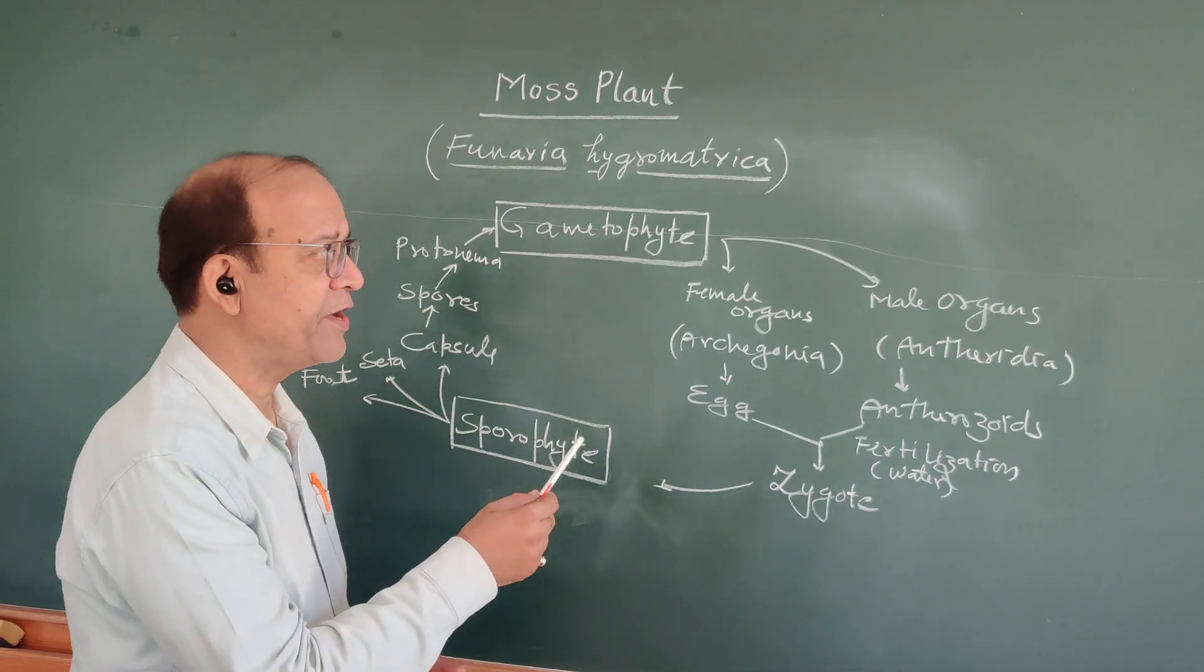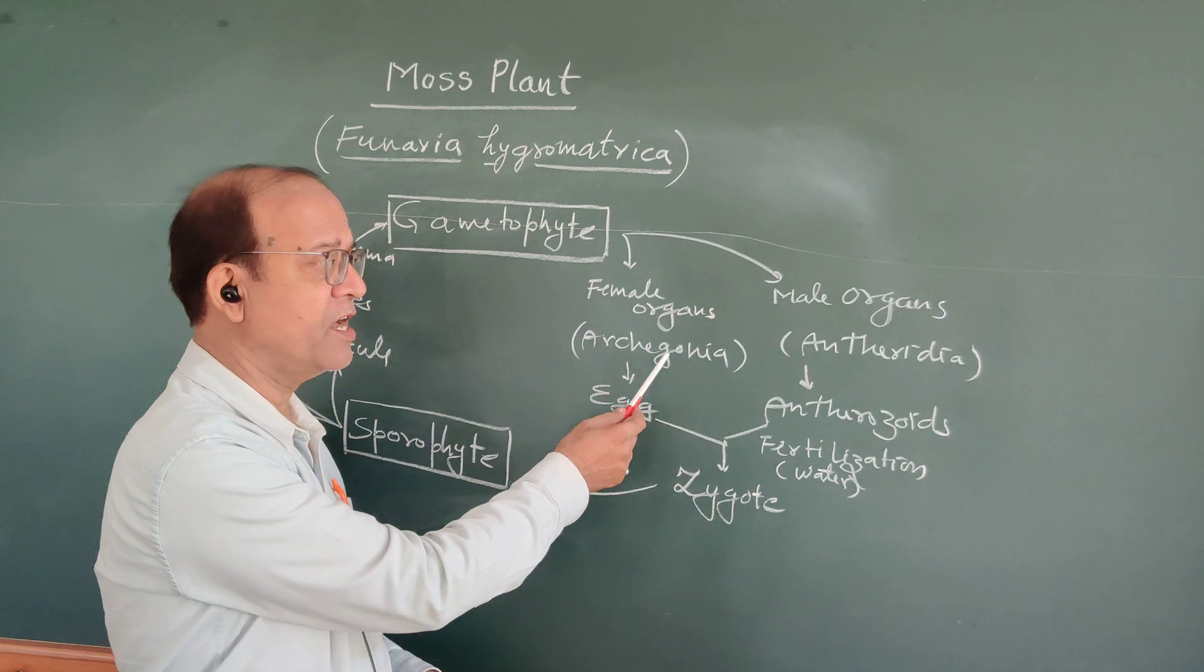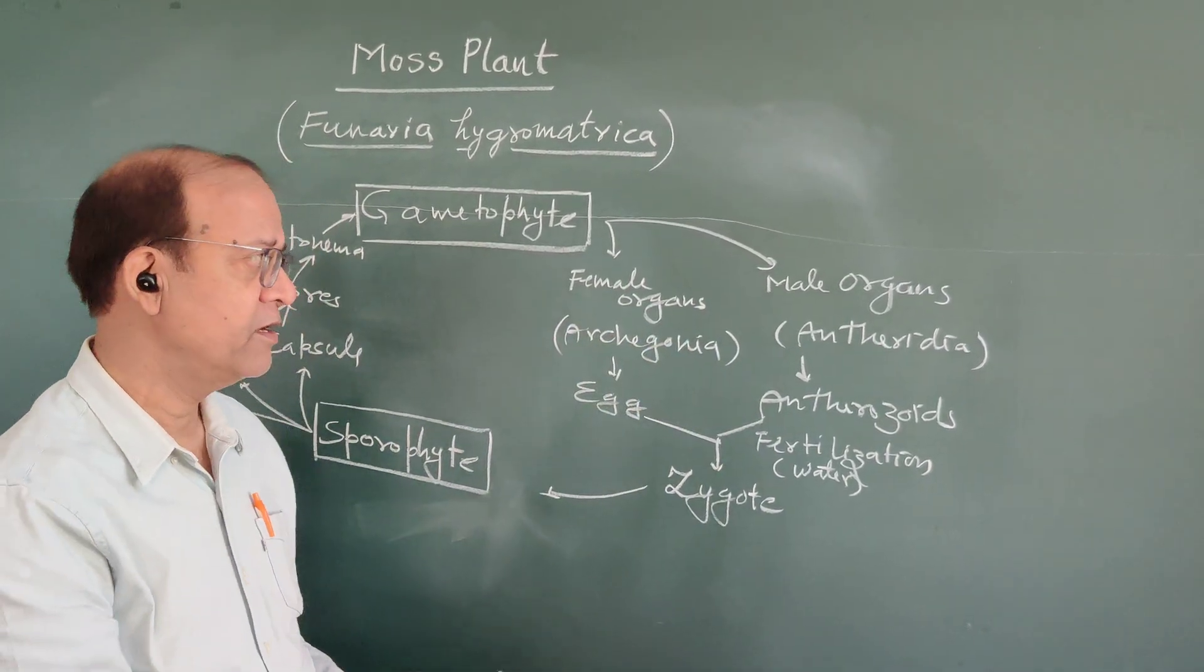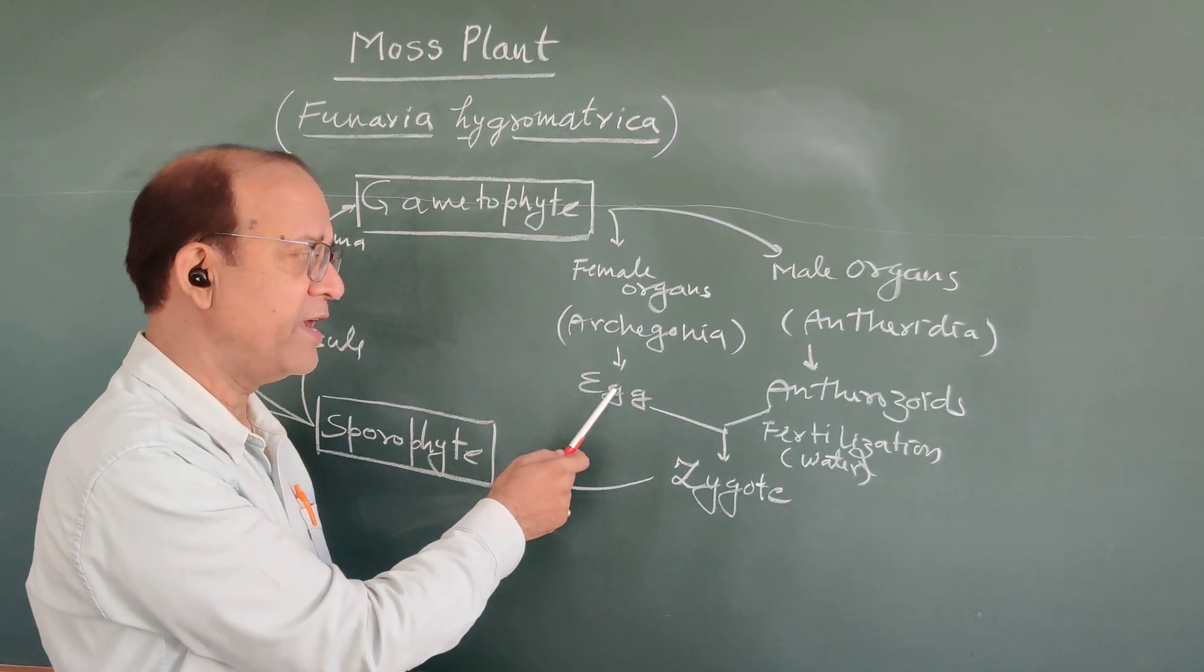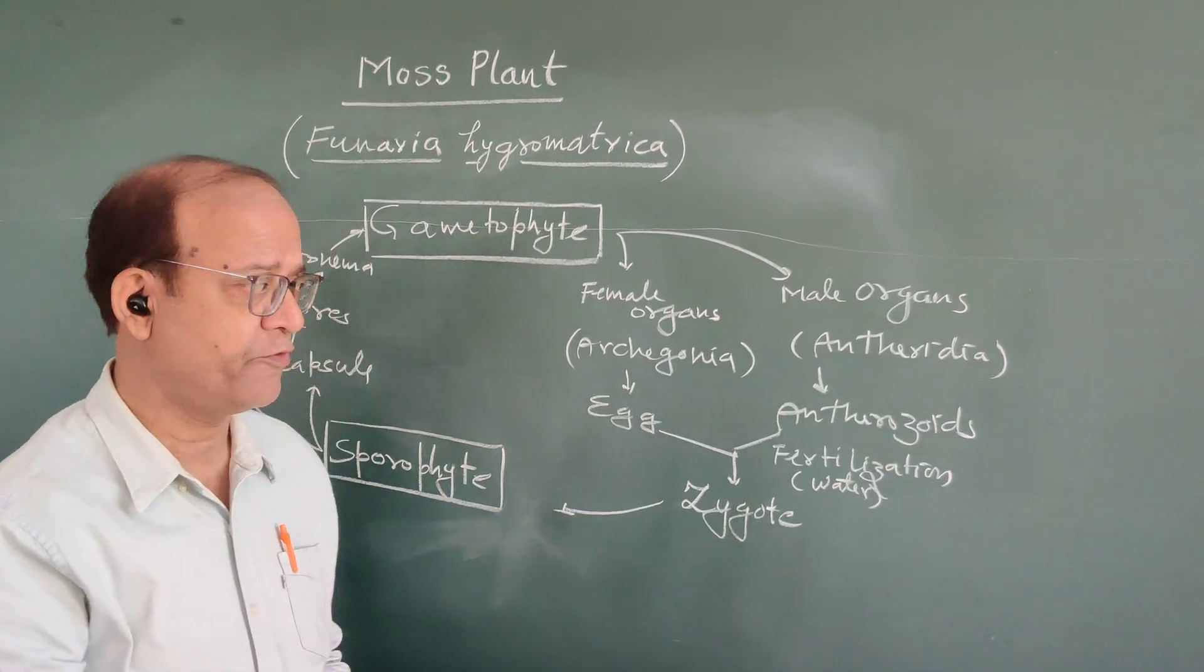This gametophyte has male and female reproductive organs. Male organs are archegonia, female organs are antheridia. In archegonia, egg cell is formed and in antheridia, antherozoids are formed.